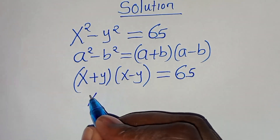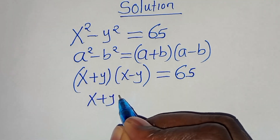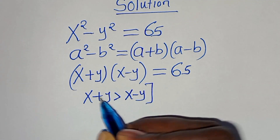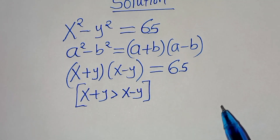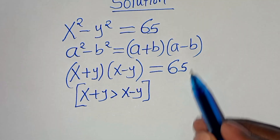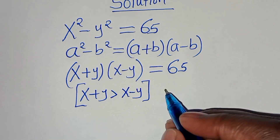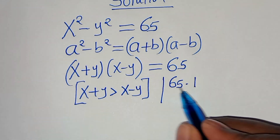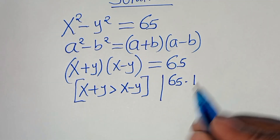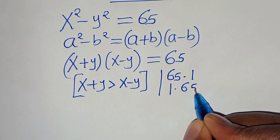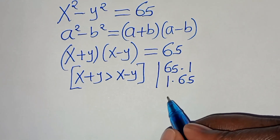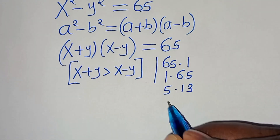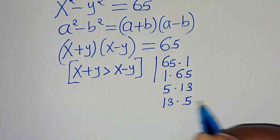We have that x plus y is greater than x minus y. Following this condition, the next step is to get the factor pairs of 65. We have 65 times 1, and 1 times 65, and we have 5 multiplied by 13, and 13 multiplied by 5.